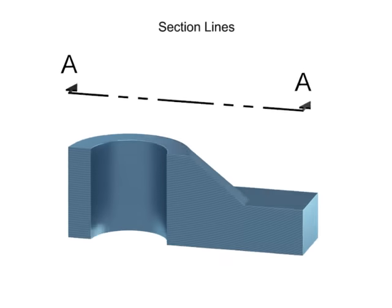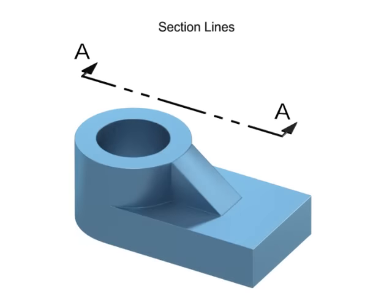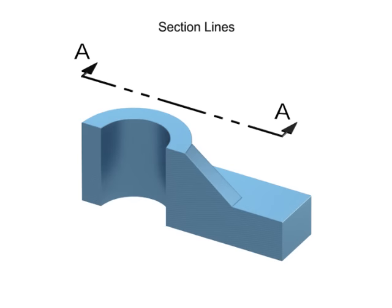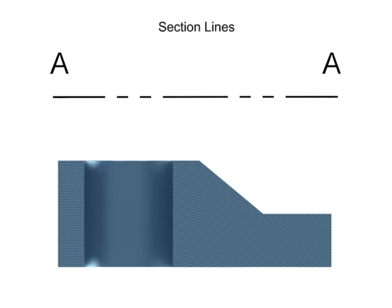There are a number of different types of sectional views that can be drawn. This is a full section view, generated when the cutting plane passes through the entire part.